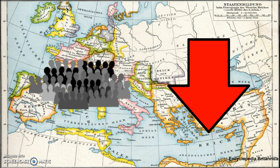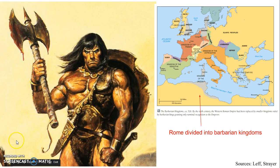These same people were not able to have children because they could not support them, which obviously decreased the population further. The depopulation of Rome was a huge blow to the military and had significant effects on the fall of the western half of the Roman Empire.